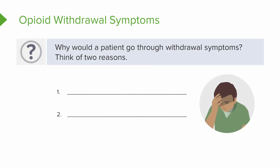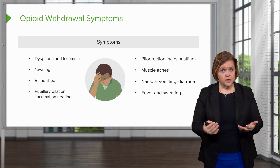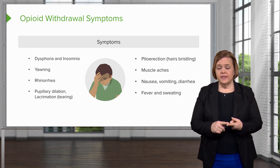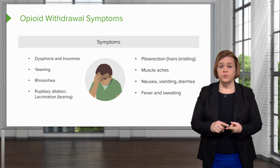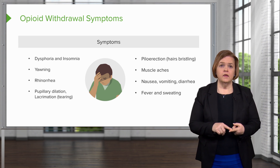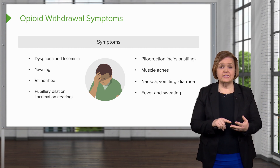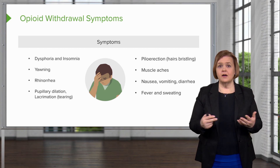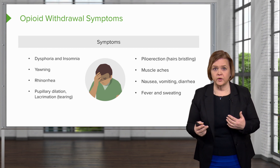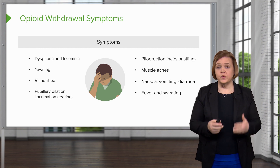Opioid withdrawal is no fun. Think of two reasons a patient would go through opioid withdrawal symptoms. First: they've overdosed, have a physical dependence on opioids, and we gave them naloxone — they're going to wake up feeling horrible. Second: a patient may have had a prescription, following exactly the doctor's orders, but stopped taking the medication abruptly after three weeks — they'll experience opioid withdrawal symptoms. Always remember when it's appropriate to wean the medication.